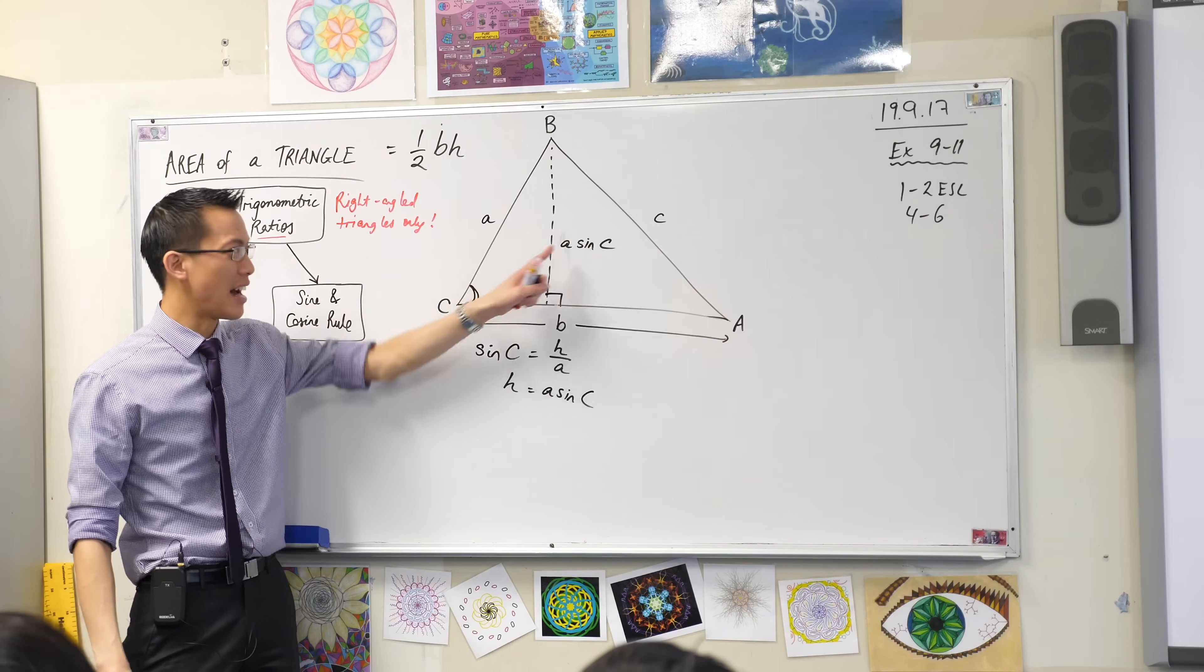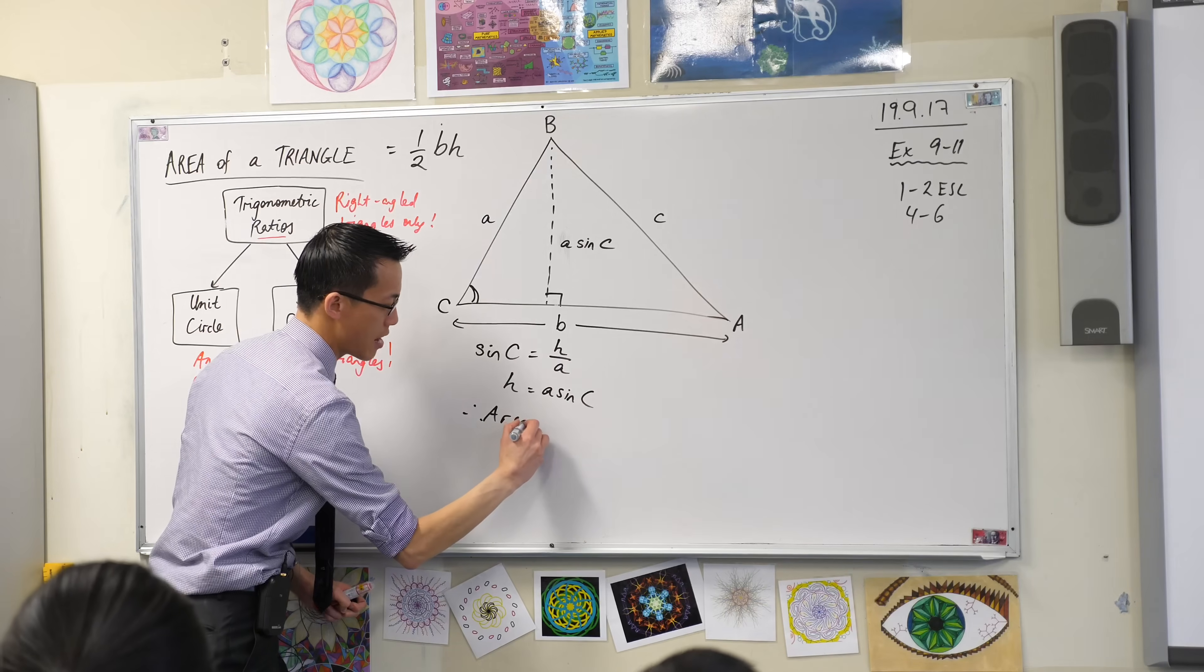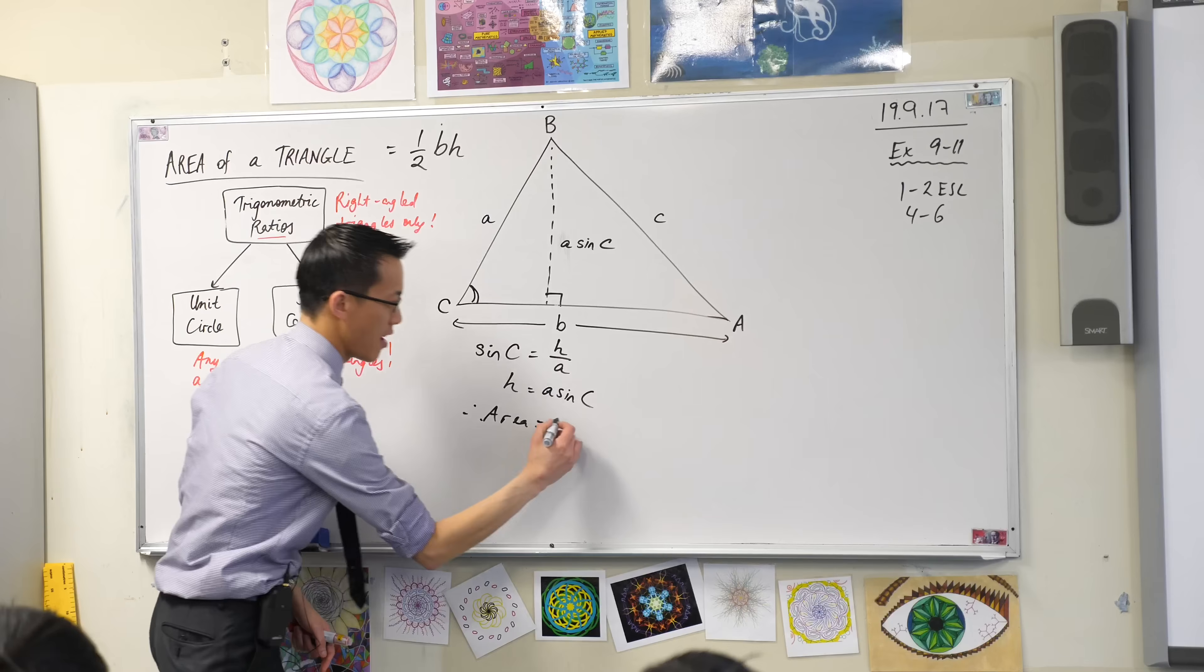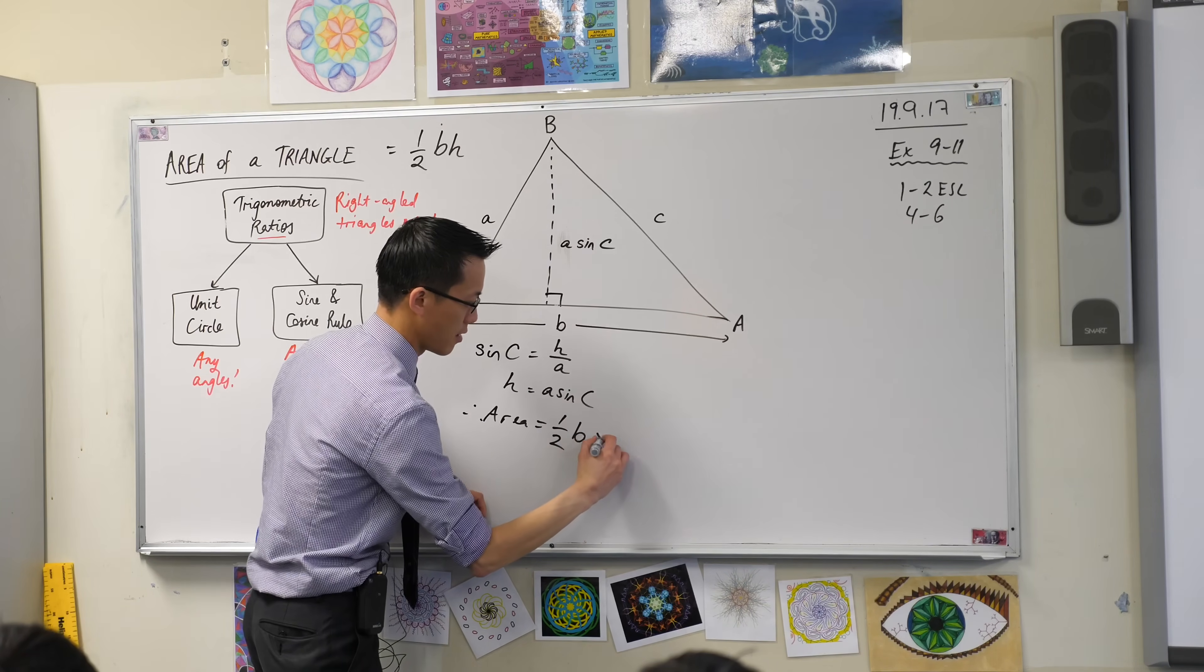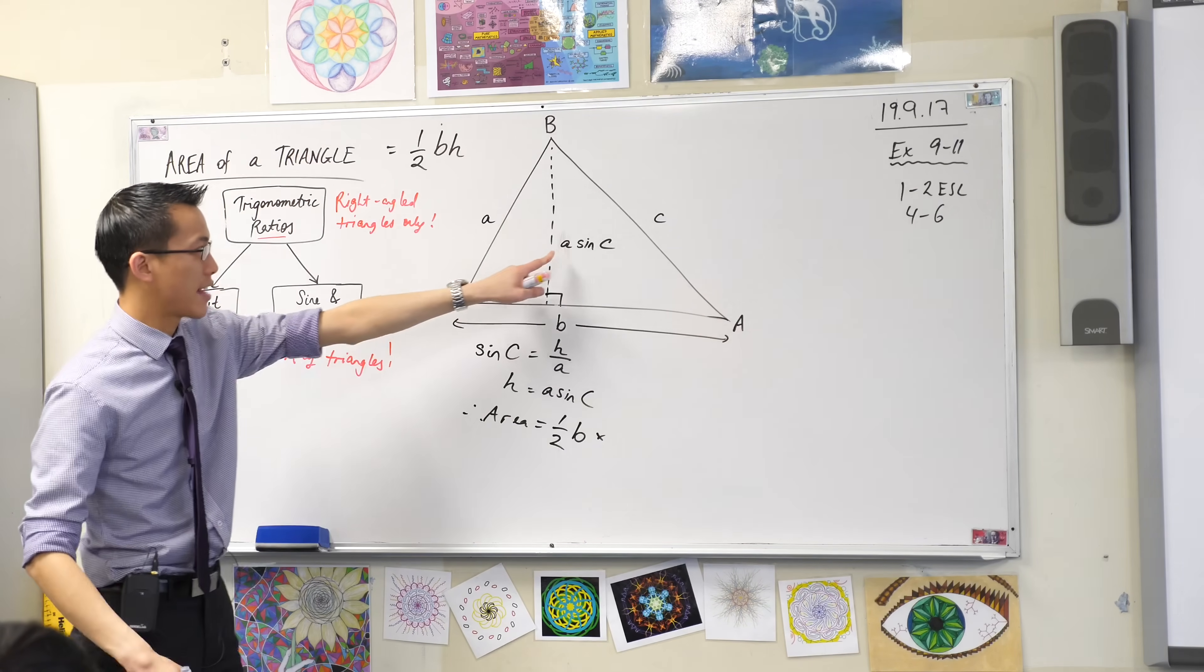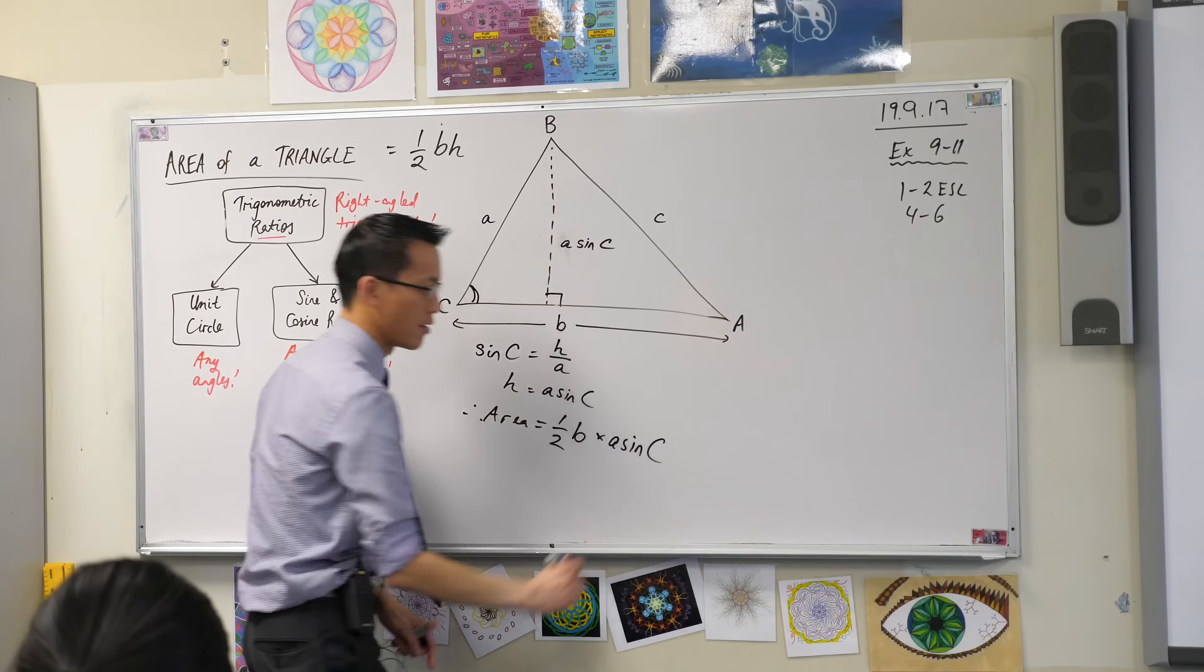Now that I know what H is, I don't have to write it anymore. So therefore, the area is equal to, well it's still half base times height, a half times the base, which is B, times the height. But I don't need to say height anymore. I can say A sine C.